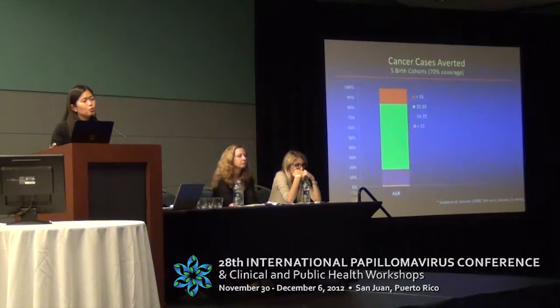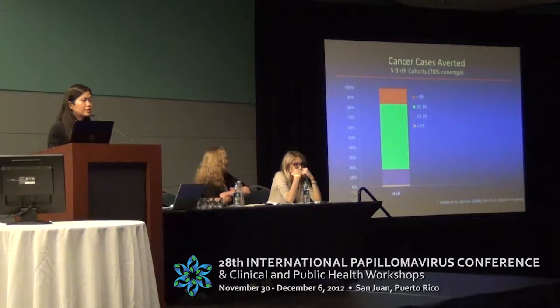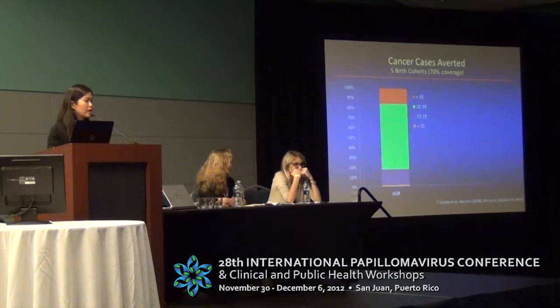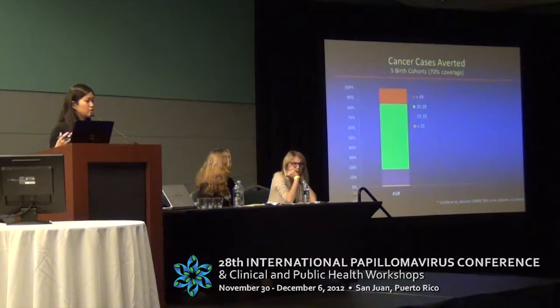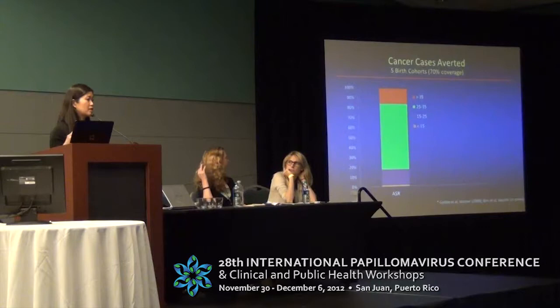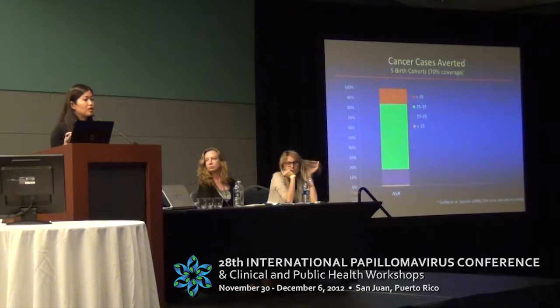Under base case assumptions, our model projected that over 1.8 million cervical cancer cases can be averted over the lifetime of five consecutive birth cohorts vaccinated at 70% coverage across the 57 GAVI-eligible countries. Interestingly, the majority of cases averted did not occur in countries with the highest incidence rates, but rather in countries with moderate cancer incidence but very large population sizes. For example, 40% of cancer cases averted were projected to occur in India, which has an enormous population.